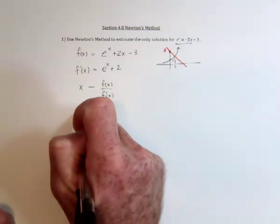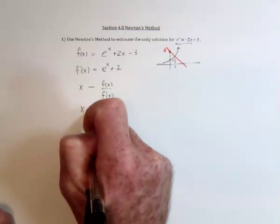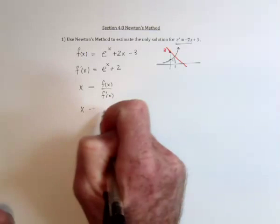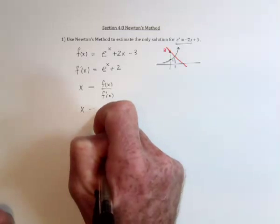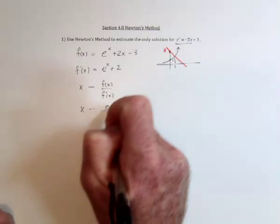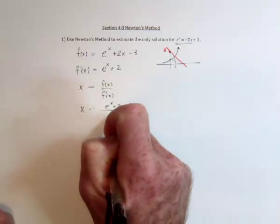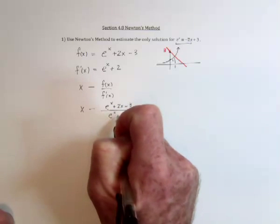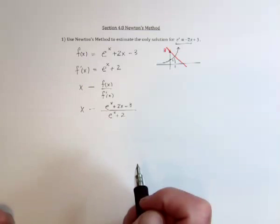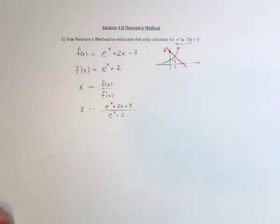Okay, so the general expression is going to be the guess, and then plug that into the function, divide it by the derivative, and whatever you get out, then substitute that back in.